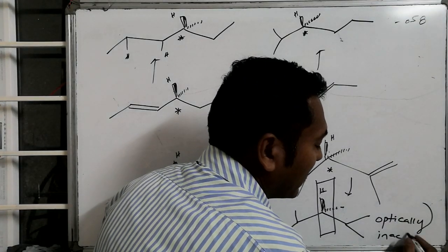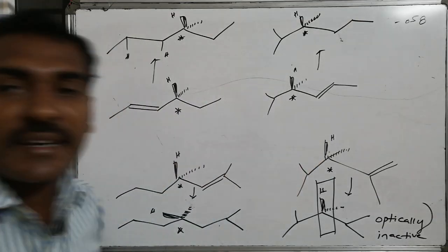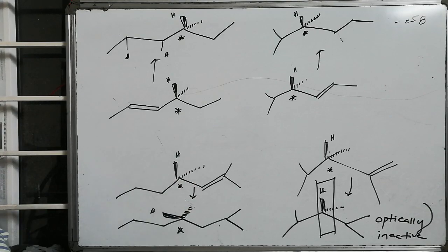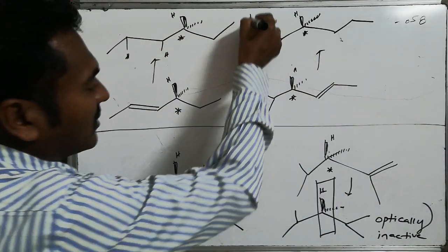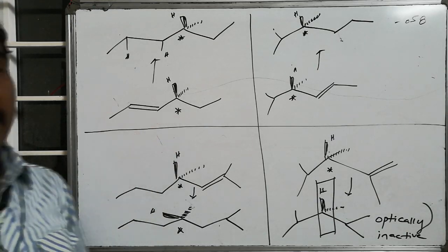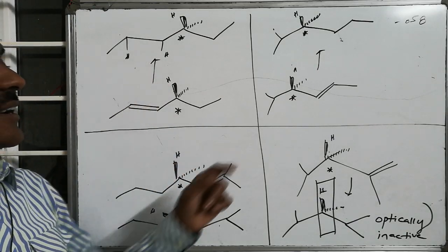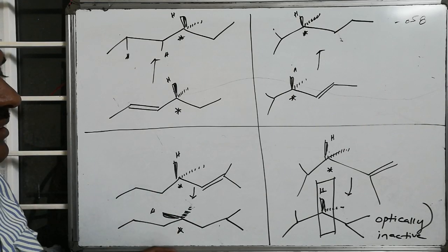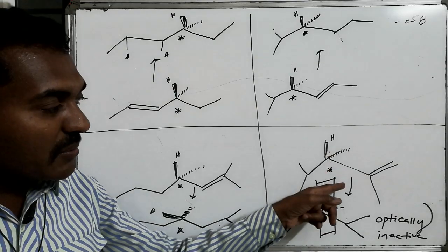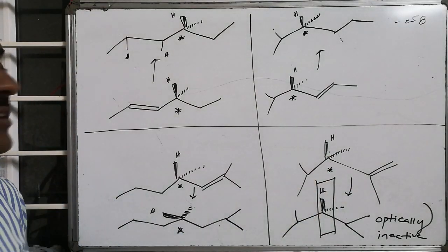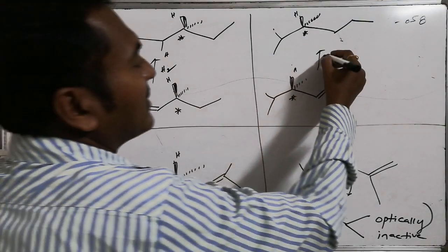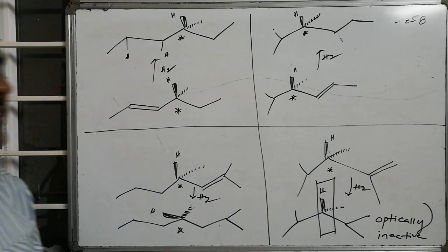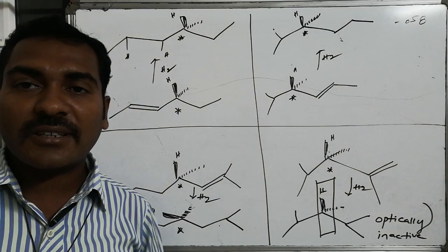In summary, of the four given compounds: the first compound was optically active and remains optically active after hydrogenation; the second was optically active and remains optically active; the third was optically active and remains optically active; the fourth compound was optically active but becomes optically inactive after cis hydrogenation. Therefore, the fourth compound is the answer.